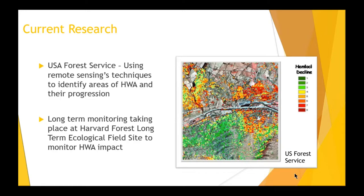They have used techniques exploiting physical decline indicators, such as gap fractioning where the needles and branches begin to disappear, leaving gaps within the canopy and making them sparser than they naturally would be.